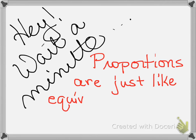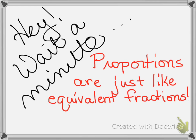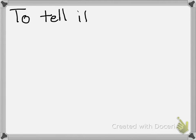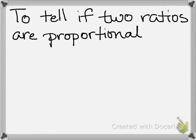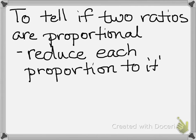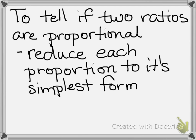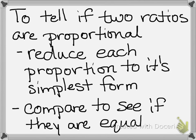Proportions are just equivalent fractions — that's all we're talking about. So if you understand equivalent fractions, you understand what a proportion is. Now, how are we going to tell if ratios are proportional? There are two steps: first, reduce each ratio to its simplest form. After simplifying, compare them. If they end up exactly the same, they're proportional. If they're not exactly the same after simplifying, they're not proportional.